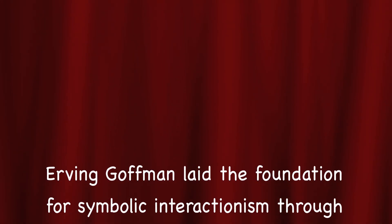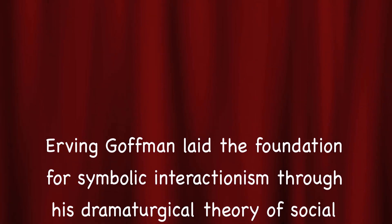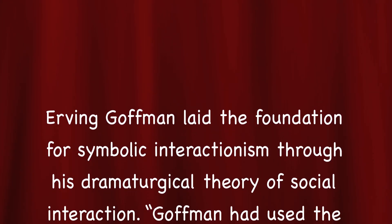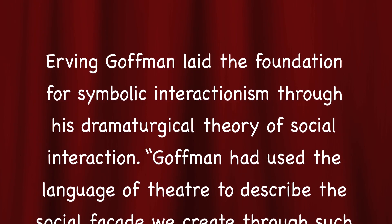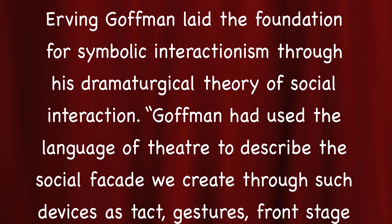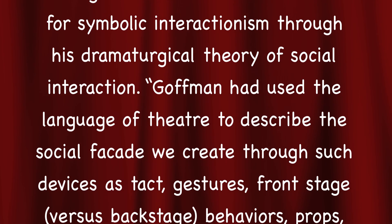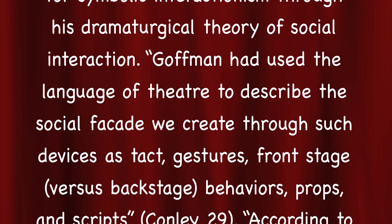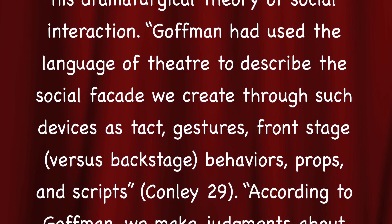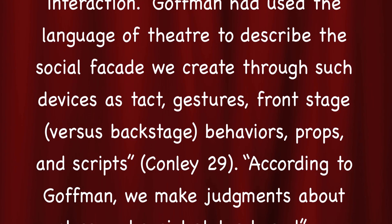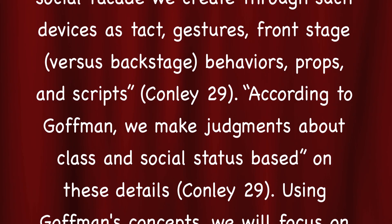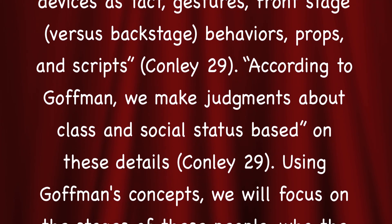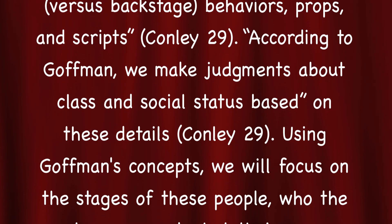Ervin Goffman laid the foundation for symbolic interactionism through his dramaturgical theory of social interaction. Goffman used the language of theater to describe the social facade we create through such devices as tact, gestures, front stage versus backstage behaviors, props, and scripts. According to Goffman, we make judgments about our class and social status based on these details.